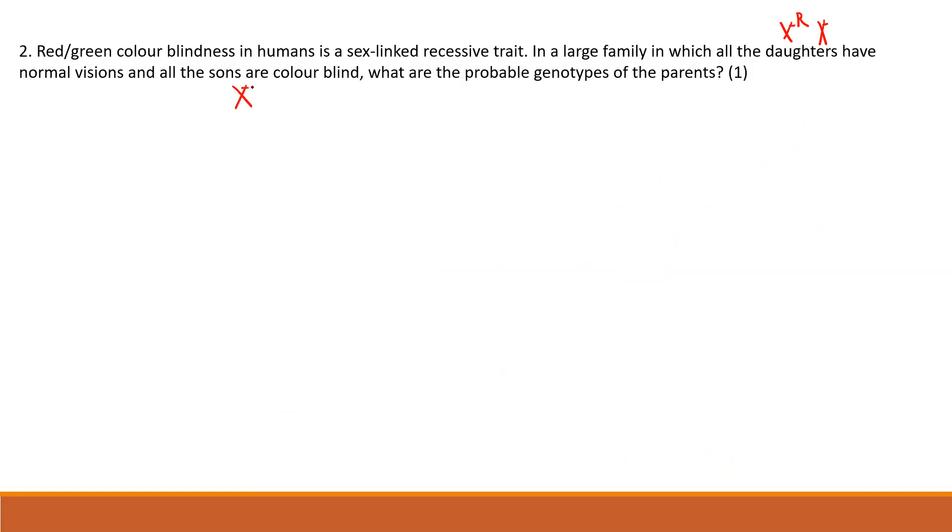What are the probable genotypes of the parents? Okay, well in this case here, the mother would have to be - oh, I'm sorry, I'm going to use c for color - it should be a big C and a little c. The mother would have to be heterozygote, and the father here would have to have normal color vision. We can explain that by proving it. This would have to be the parents, and we can prove this by doing the Punnett square, the female, the mother, and the father.